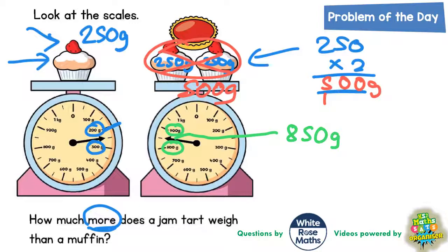So if the two muffins together weigh 500 but the whole side weighs 850, then the difference between them must be the weight of the jam tart.